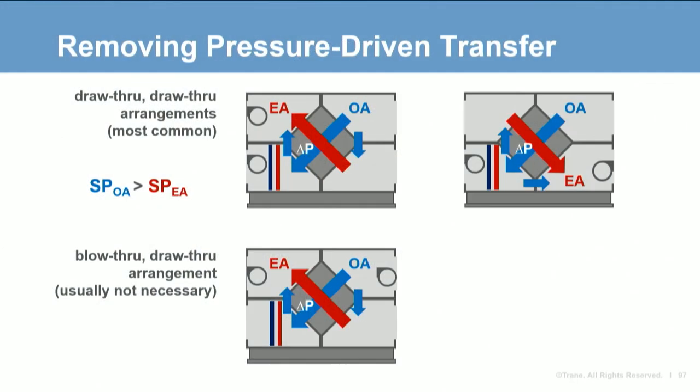To remove pressure-driven transfer, fan placement can be used to achieve the desired static pressure differential. For a cross-flow exchanger, the draw-through/draw-through arrangement will typically have a higher static pressure in the outdoor air path than the exhaust air path, removing pressure-driven transfer. If exhaust transfer is a concern, both design and expected operating conditions should be checked, and sensors can be added to measure the differential — if it goes negative, an alarm can activate or a control sequence can react. This method will result in an exhaust air transfer ratio of zero; however, the only way to guarantee no cross leakage is to isolate the exhaust.